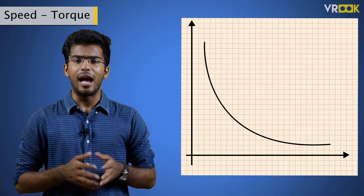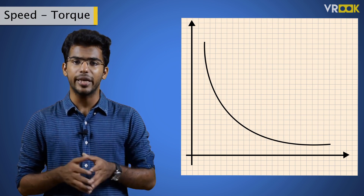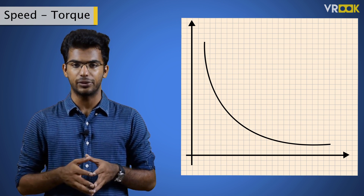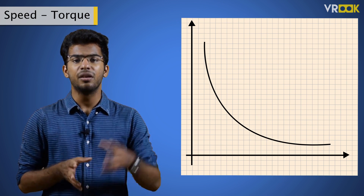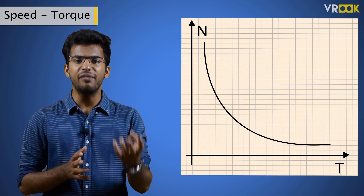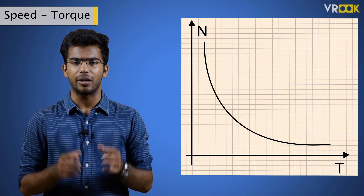That covers the speed-current characteristics of a series motor. Now let's move on to the last characteristic: speed-torque characteristics. Looking at the graph, we can interpret that as torque increases, the speed of the motor decreases. Because as torque increases, armature current increases and in turn increases the magnetic flux. Since flux and speed are inversely proportional, the speed decreases with an increase in flux. So at low torque, the speed of the motor is high.